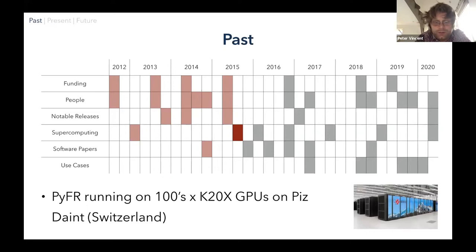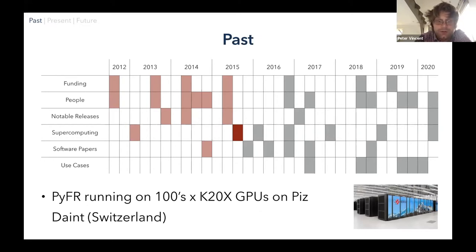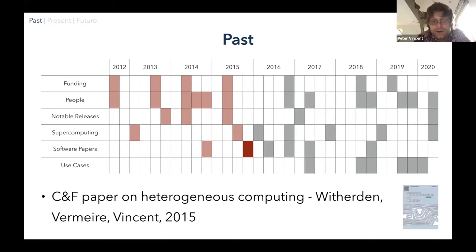By this point we'd advanced up the food chain in terms of using larger supercomputers and were running on hundreds, towards thousands, of K20X GPUs — state of the art at the time — on Piz Daint, a very large cluster at CSCS in Switzerland. A second paper came out on the software aspects of PyFR, with Freddie as lead author, looking at the heterogeneous computing aspects.